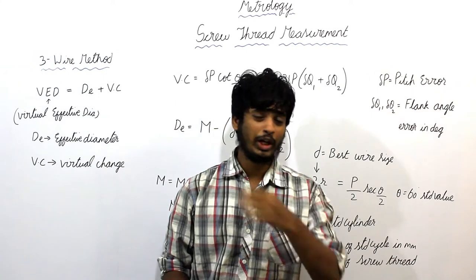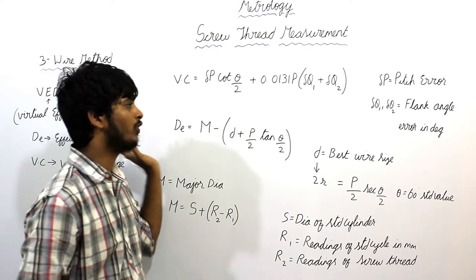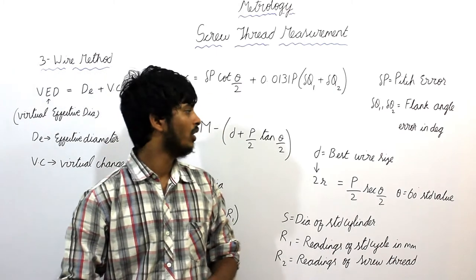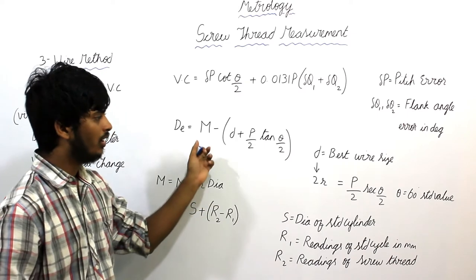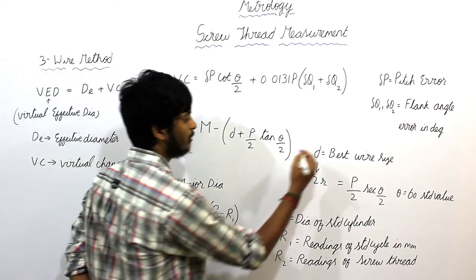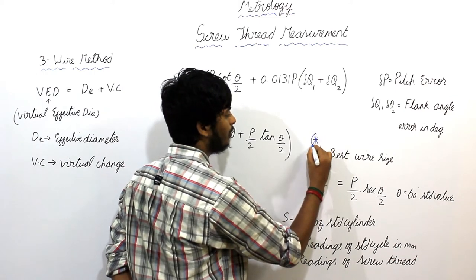They are immediately asking only these three formulas for solving problems. And almost 55% of problematic questions under this screw thread measurement is they will ask you to find best wire size. They will ask you to find best wire size.